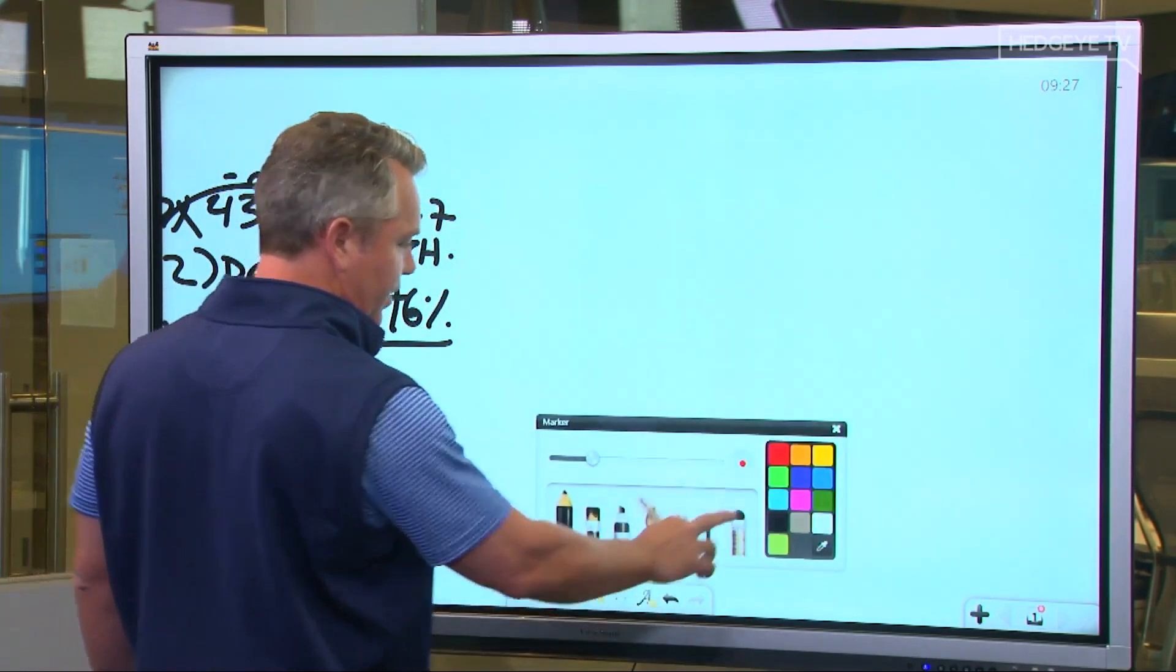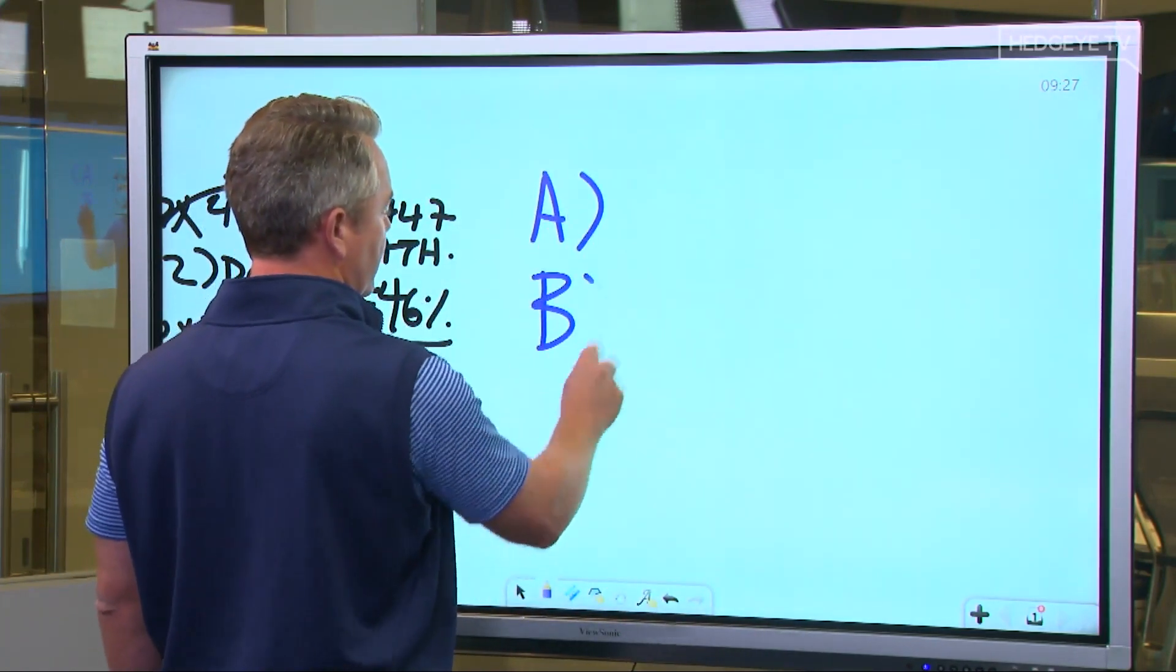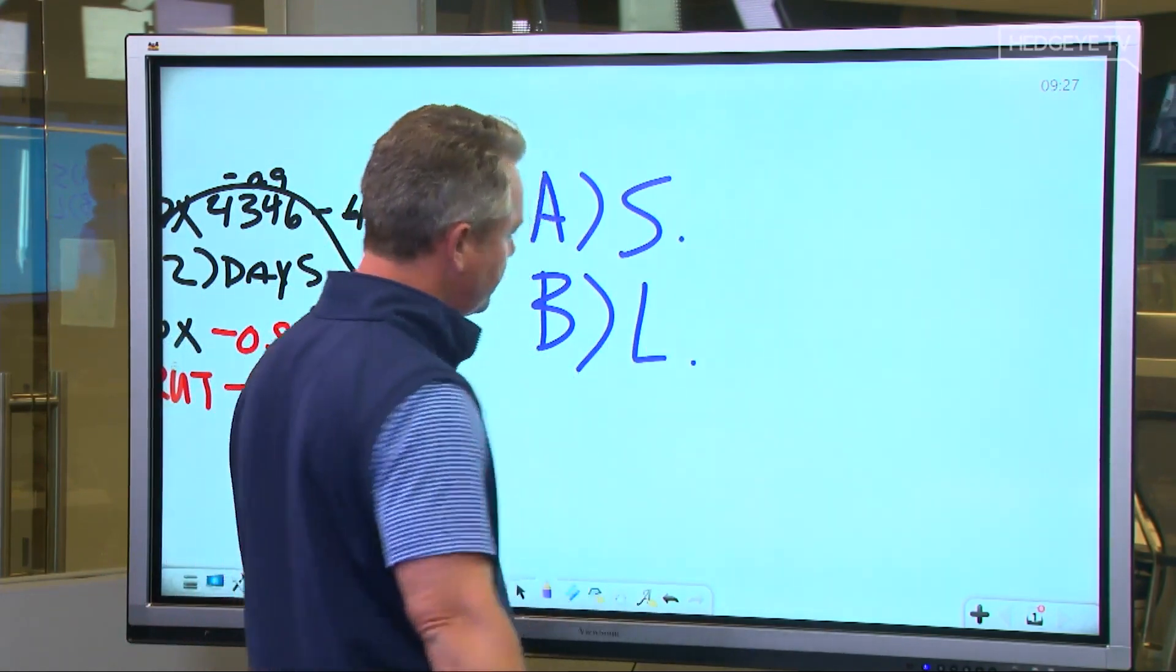So again, if you look at this for what it is, A, you got the short end of the curve. B, you got the long end of the curve. So we'll just call this short term rates, long term rates.